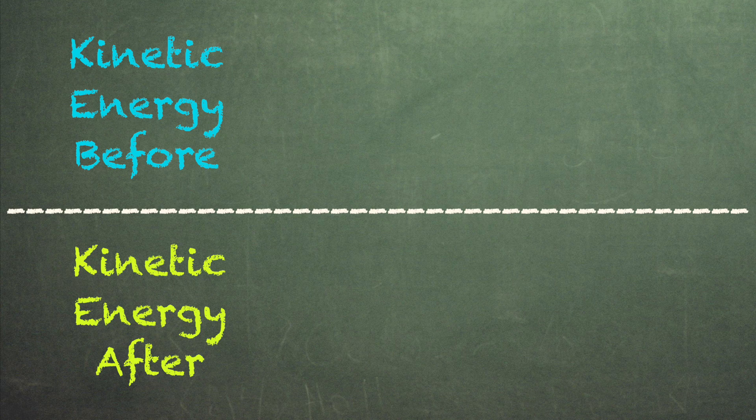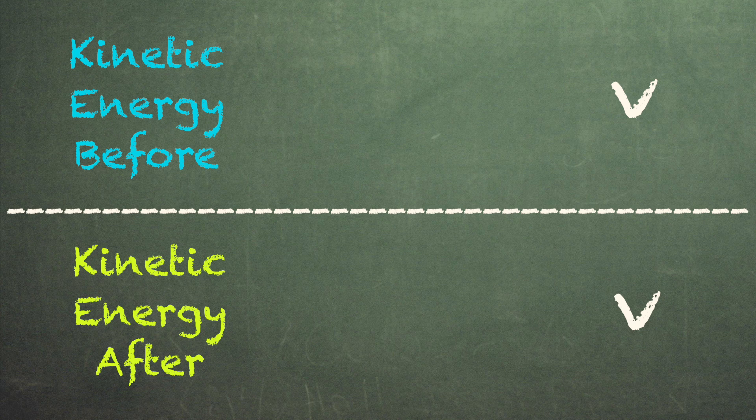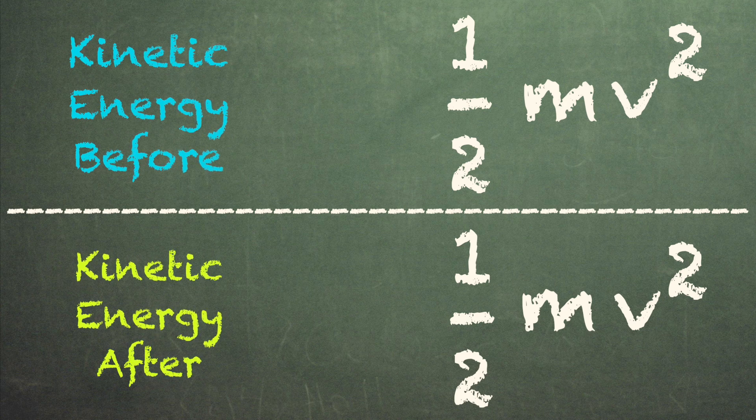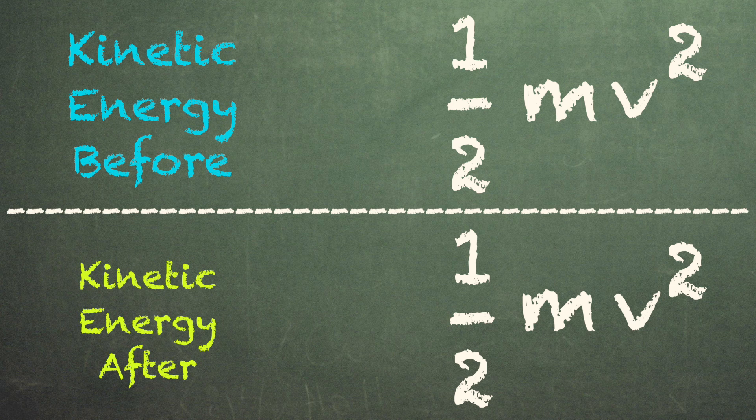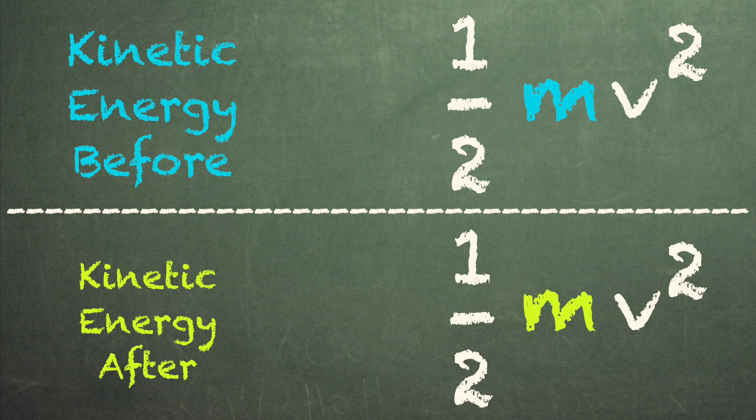But this sounds stupid since we already said that Sheldon's speed V was unchanged by the turning on of the lightsaber. Yet kinetic energy is half of mv squared. So if Sheldon's kinetic energy before was greater than after, then it must be that Sheldon's mass decreased when the lightsaber was turned on.